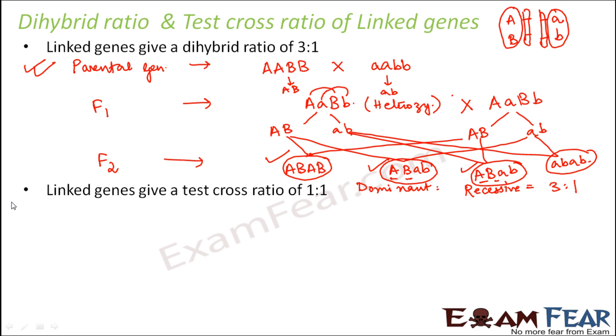Now similarly, let us try to perform a test cross. What is a test cross? So a test cross is nothing but a cross between a heterozygous and a homozygous recessive. So what is heterozygous? So heterozygous would be something like what we got in the F1 generation. So this is basically a heterozygous. So we take a heterozygous and then we cross it with a homozygous recessive. So homozygous recessive would be something like this.